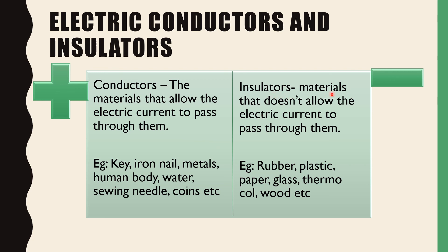Insulators are materials that do not allow electric current to pass through them. Examples include rubber, plastic, paper, glass, thermocol, and wood. You can place a rubber in place of the switch and see whether the bulb glows — it will not glow because rubber is an insulator and the connection is not completed.